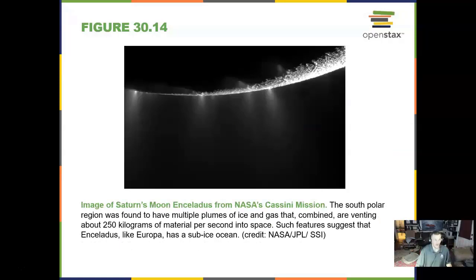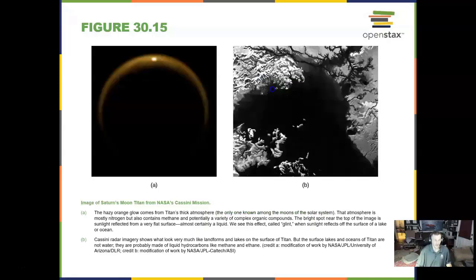The same kind of spacecraft that saw Saturn was the NASA Cassini mission. And here we see jets of water coming out of the south pole of Enceladus, a moon of Saturn. We have actually landed on the moon Titan at Saturn — it is the biggest moon and the only one with a thick atmosphere.